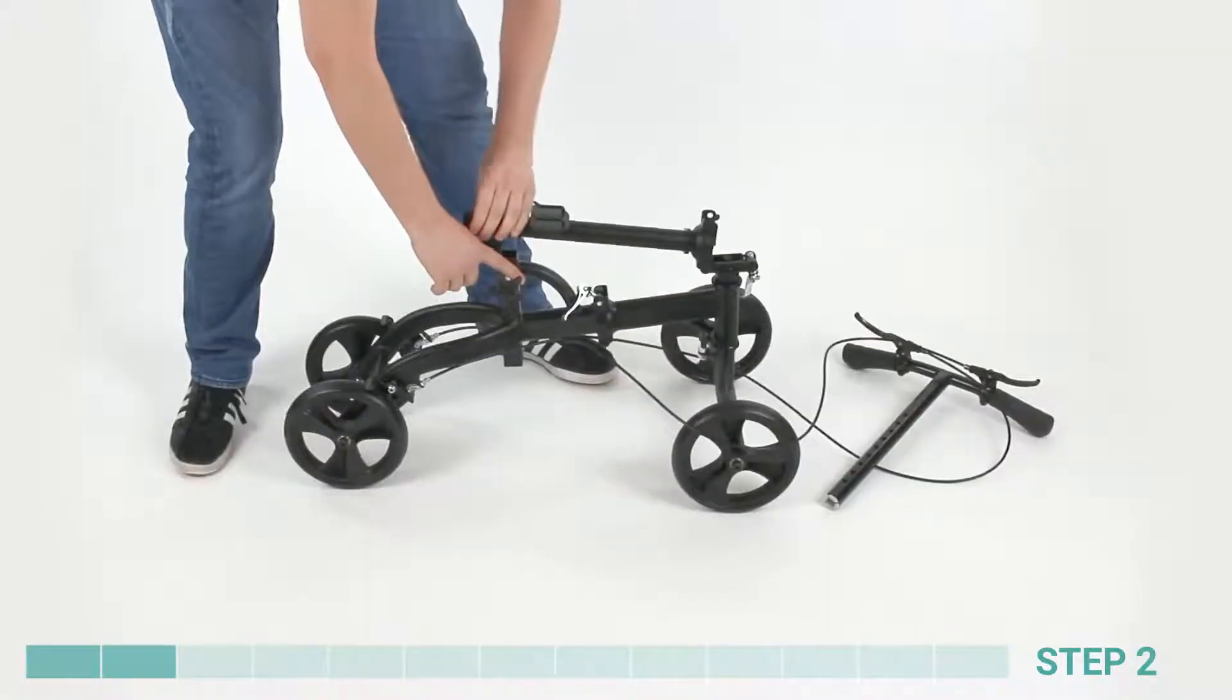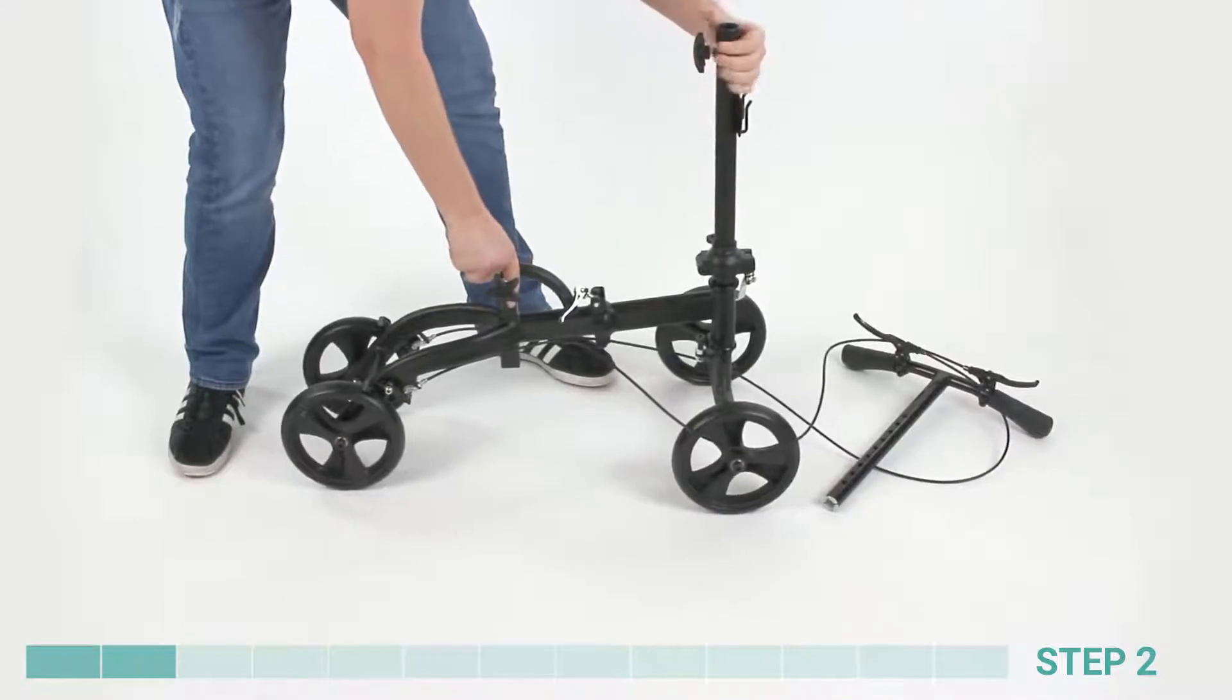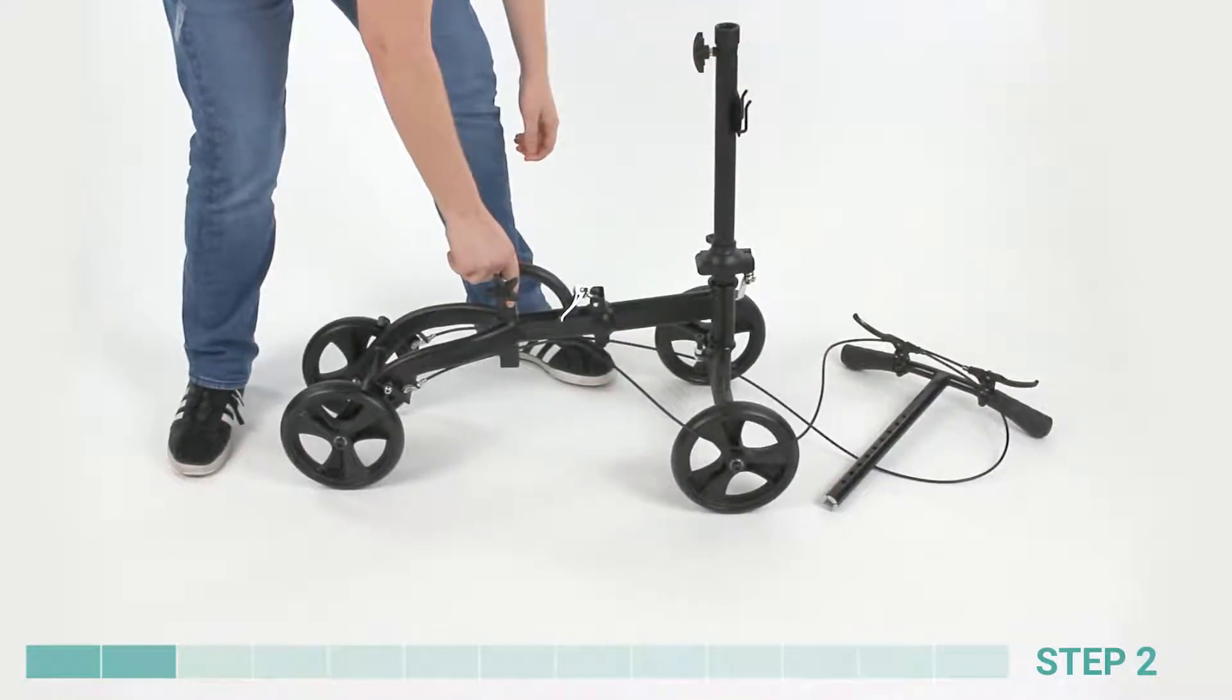Step 2. Lift the steering column up until it locks into the folding joint over the front axle.